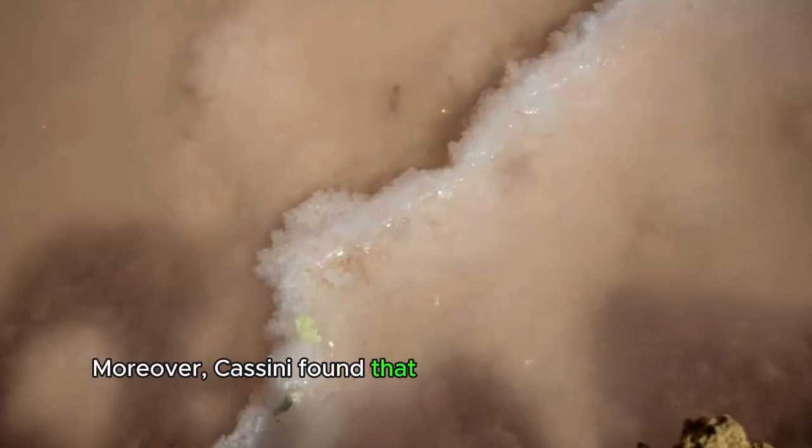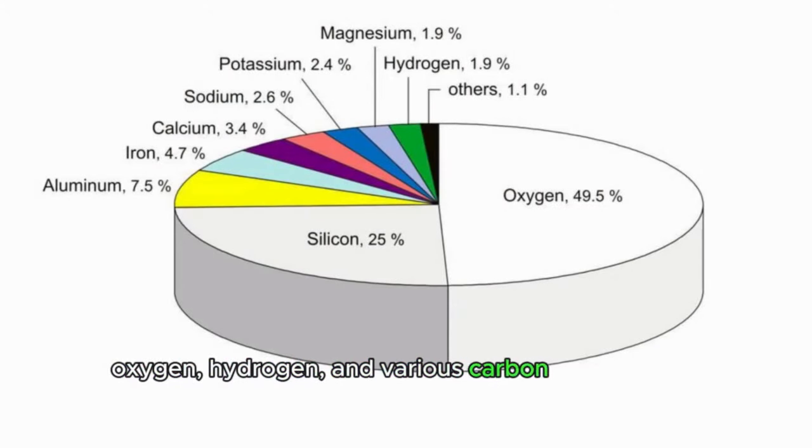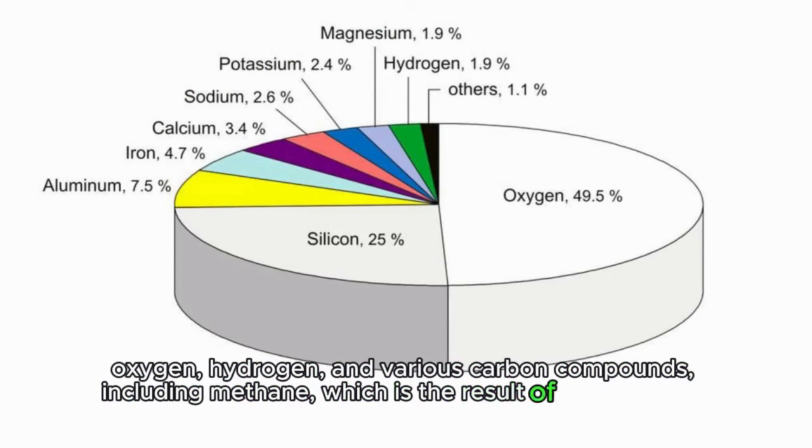Moreover, Cassini found that these geysers contain the chemical elements necessary for life: oxygen, hydrogen, and various carbon compounds, including methane, which is the result of microbial life.